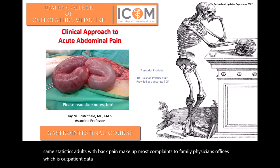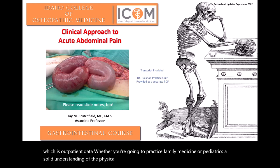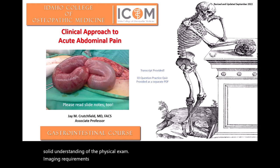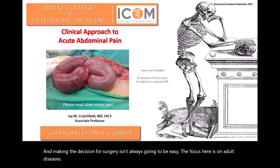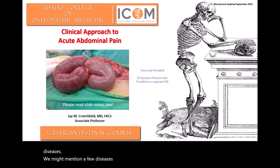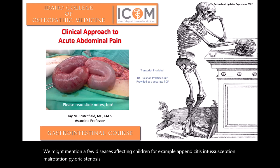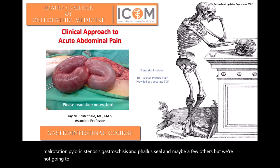Whether you're going to practice family medicine or pediatrics, a solid understanding of the physical exam, imaging requirements, and possible causes of adult or pediatric abdominal complaints is a necessity. And making the decision for surgery isn't always going to be easy. The focus here is on adult diseases. We might mention a few diseases affecting children — appendicitis, intussusception, malrotation, pyloric stenosis, gastroschisis, and omphalocele — but we're not going to prioritize children over adults, at least not today.